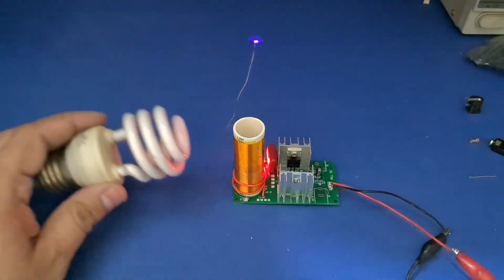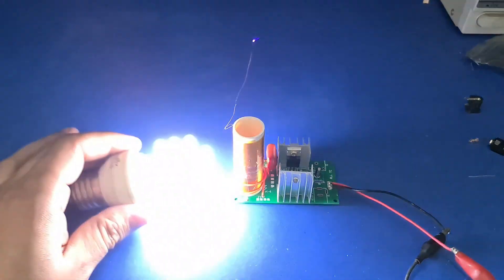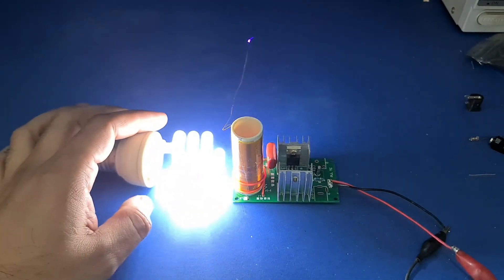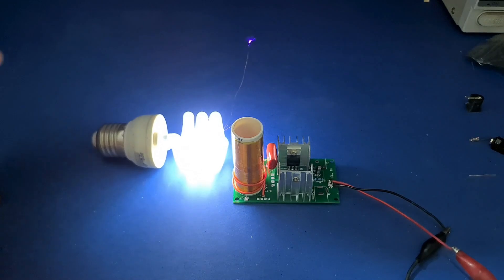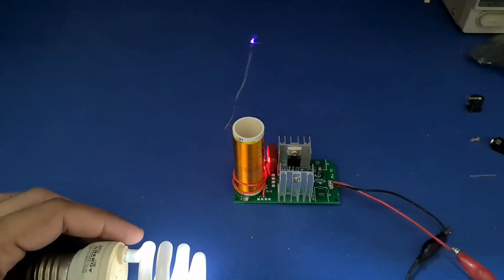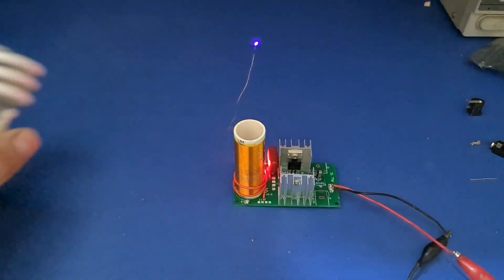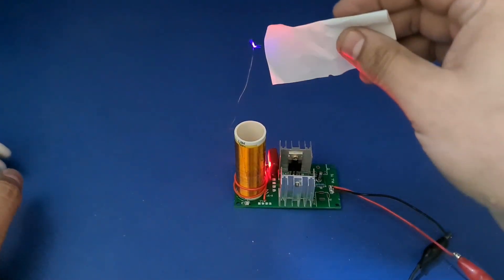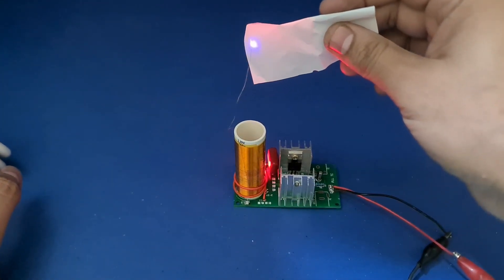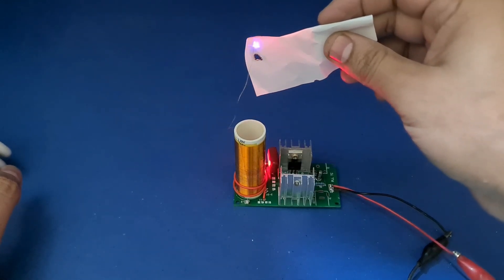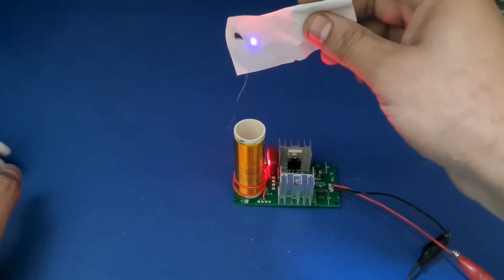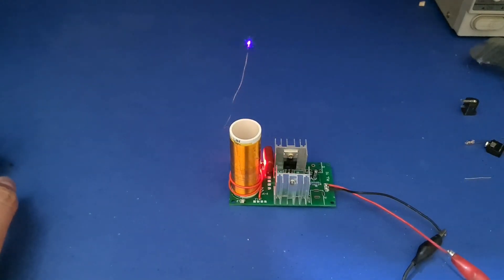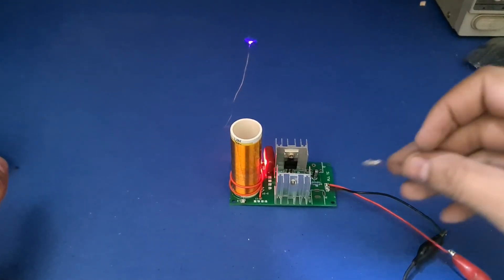Things are a bit scary here because this bulb is glowing at full power even without touching the Tesla coil. In fact, it still glows at a distance of five to six inches, which is scary. Let's try to burn a paper now. Yes, it's easily burning it! Let's see if it can glow this neon bulb.